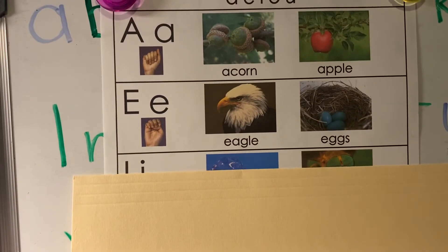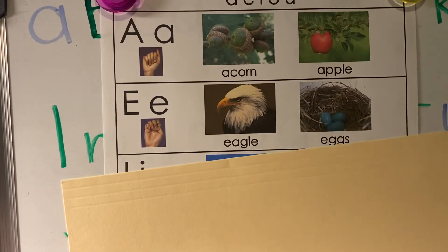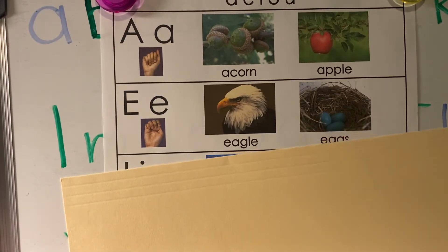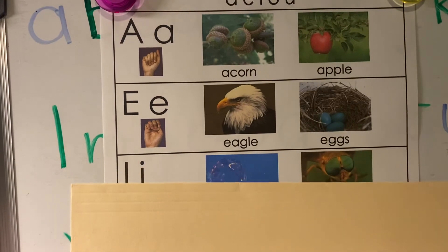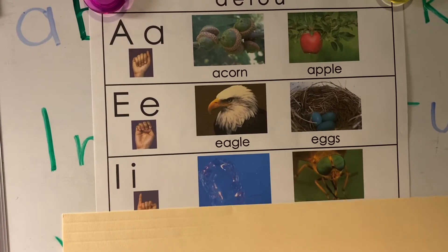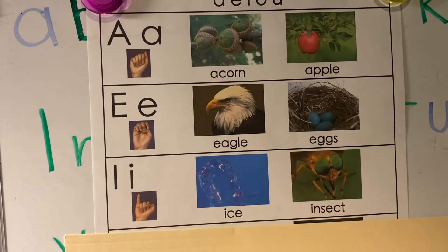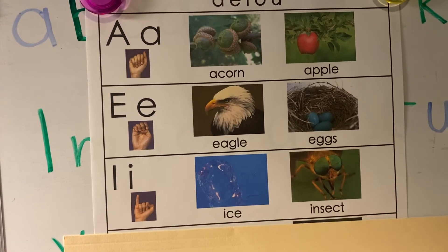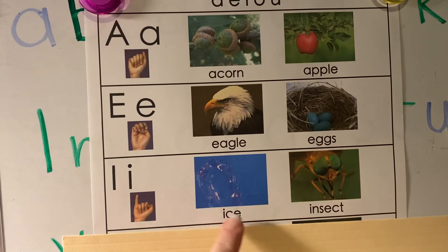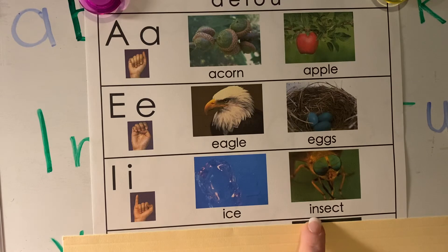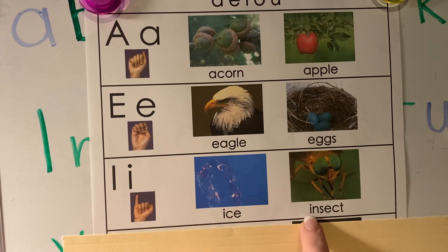The next one we're going to be looking at is I. I can say its own name, as in ice. Or it can say the short sound, I, as in insect.